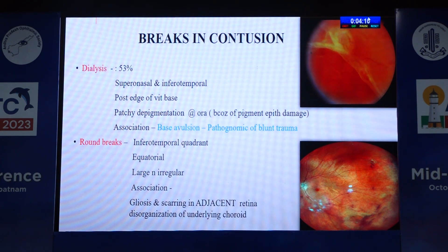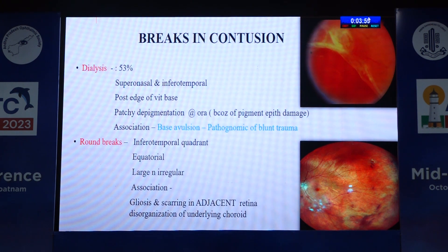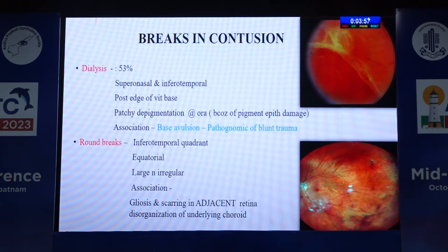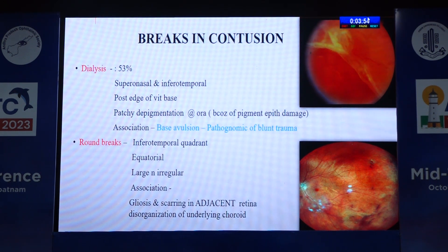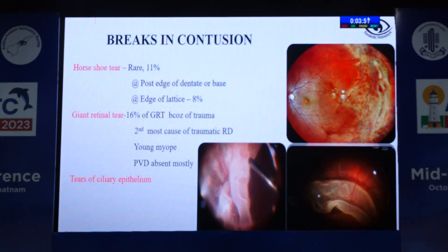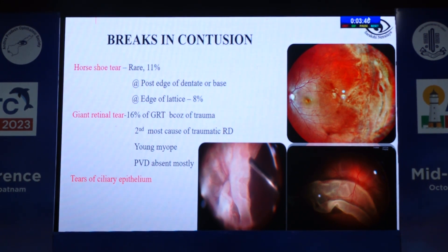The most common break seen in blunt trauma is dialysis, found in 53% of cases, and pathognomonic of blunt trauma is base avulsion. Round breaks are less commonly seen with trauma. Horseshoe tears are very rare with traumatic RDs and occur at the posterior edge of the dentate, the base, or the edge of lattice. Giant retinal tears are the second most common cause of traumatic retinal detachment, and in these cases PVD is usually absent.